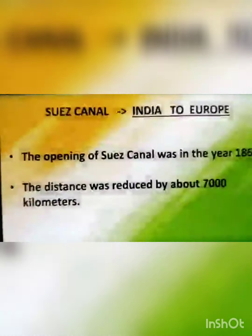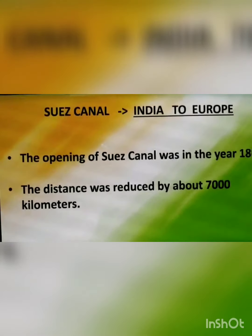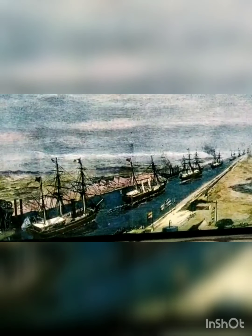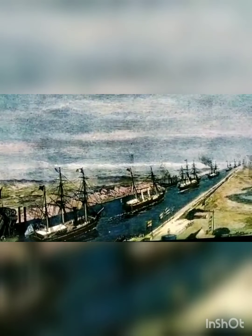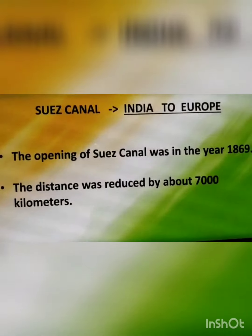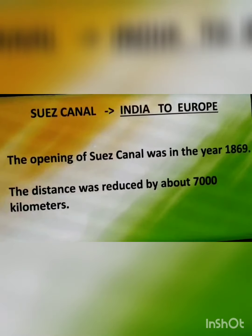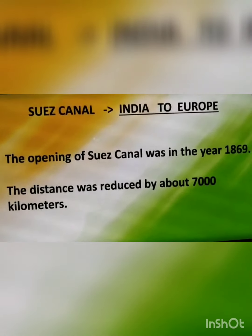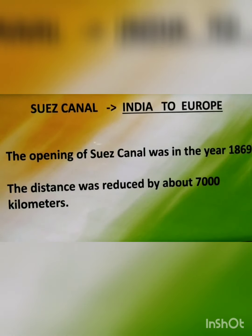As we have many water bodies related to us, it is very easy to trade using these water bodies. This is the first picture of the opening of the Suez Canal in 1869, where ships and steamers used to carry products from India such as crops, silk, muslin, tobacco, etc. to Europe. Because of the Suez Canal, the distance between India and Europe was reduced by about 7,000 kilometers. This was a major help for India across the international waterways.